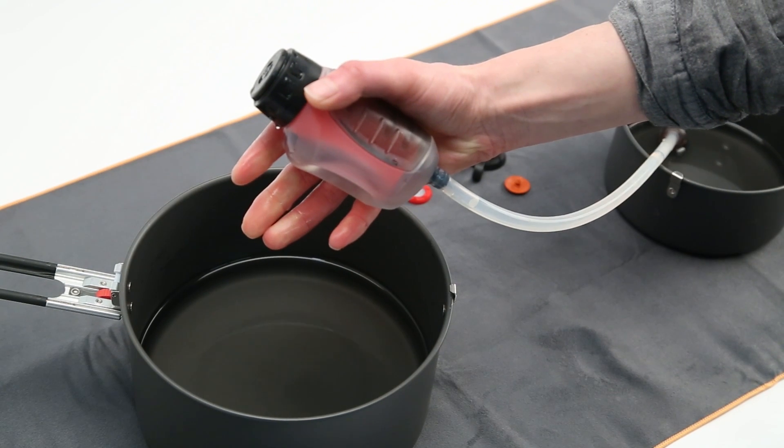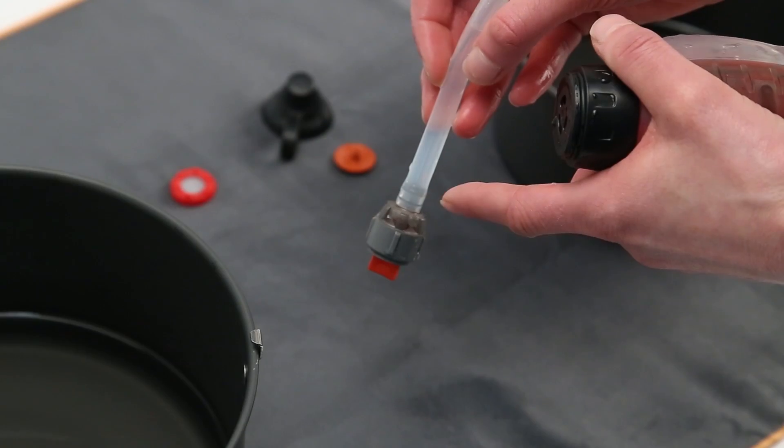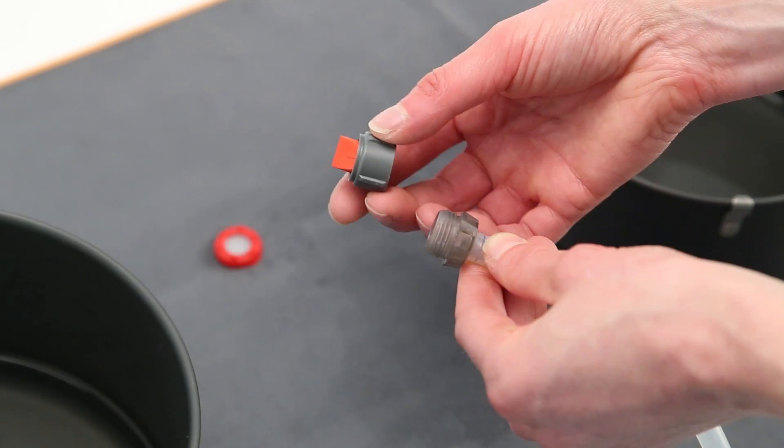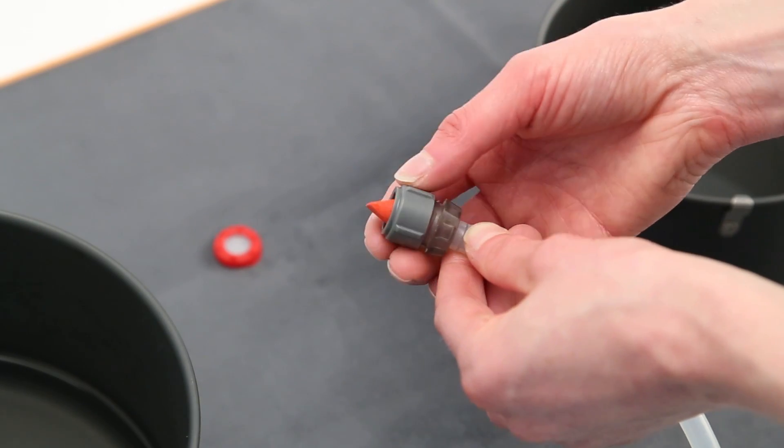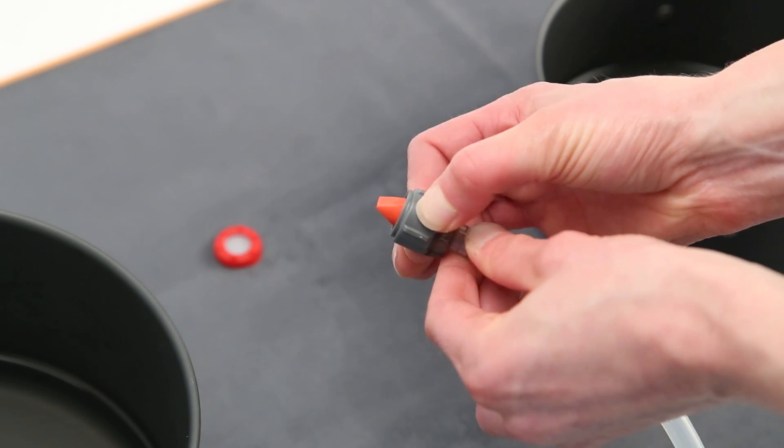If the bulb reinflates within 30 seconds, the filter is not safe. If a few bubbles escape the check valve, unscrew the female check valve housing back onto the male. Then test the filter again.